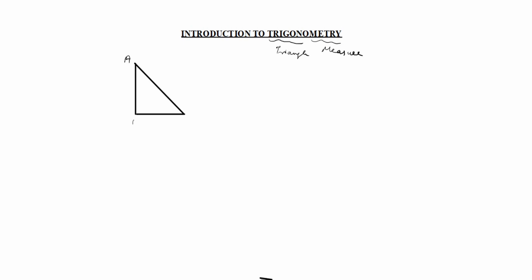Let us consider one triangle A, B, C. Let 'a' be the length of the side opposite angle A, 'b' be the length of the side opposite angle B, and 'c' be the length of the side opposite angle C. In a triangle, we have to calculate only angles and sides. Angles are angle A, angle B, angle C. Sides are a, b, c.